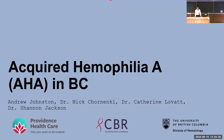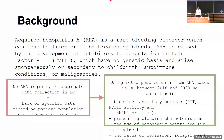My name is Andrew, and this summer I've been working with Dr. Shannon Jackson as well as hematology residents Dr. Nick Cronenke and Kate Levitt on a review of acquired hemophilia A in BC. Acquired hemophilia A is a rare but serious bleeding disorder that occurs when the body develops inhibitors or antibodies to factor eight, which is a coagulation factor. These inhibitors have no genetic basis and arise spontaneously or secondary to malignancy, childbirth, or autoimmune conditions.